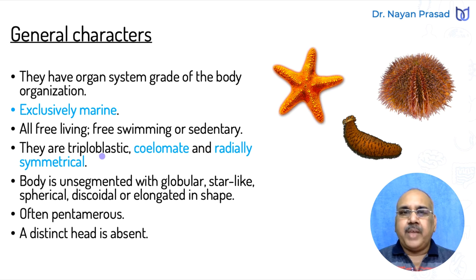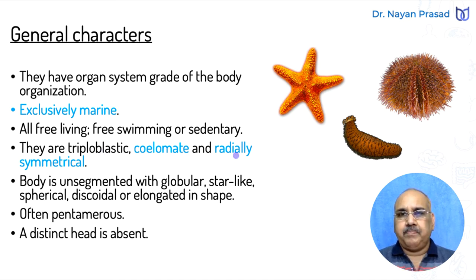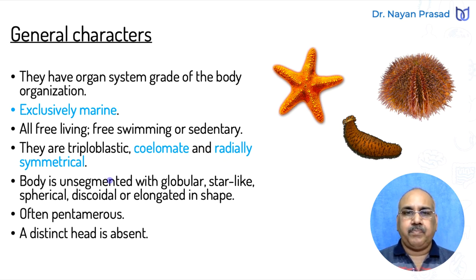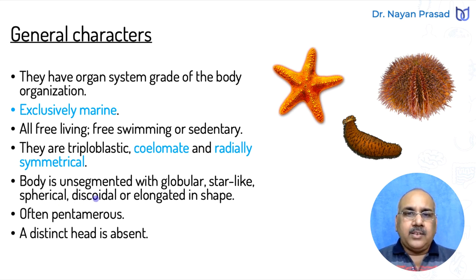Triploblastic means they have three germinal layers: ectoderm, mesoderm, and endoderm. One peculiar condition here is that adults are with radial symmetry — as you can see in the body of a starfish, the body can be divided into two equal parts by more than one plane. Adults are radially symmetrical while larvae have bilateral symmetry. This is a peculiar feature for echinoderms. The body is unsegmented and may be globular, star-like, spherical, discoidal, or elongated in shape — the sea cucumber has an elongated body.